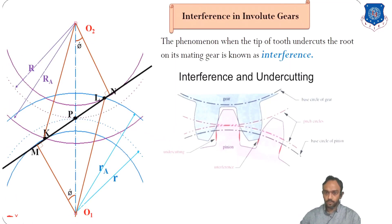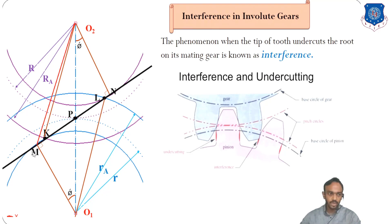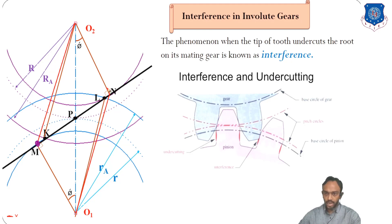This is the figure for the length of path of contact. You know this is the length of the addendum, but what will be the maximum addendum possible? The maximum addendum can be possible up to point M. If you increase the addendum length beyond M, there will be interference. So we have to find the maximum addendum length. Our contact points — points of engagement — will be at M and N. The length of path of contact for maximum possible addendum will be MN.